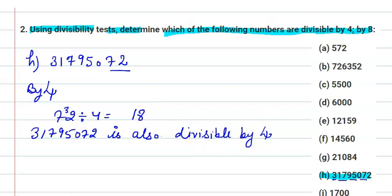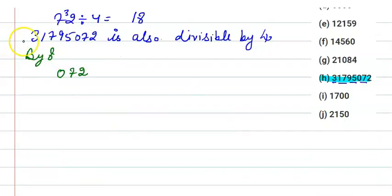Now, check the divisibility rule by 8, in which if the last three digits are divisible by 8, then we can say that this given number is also divisible by 8.